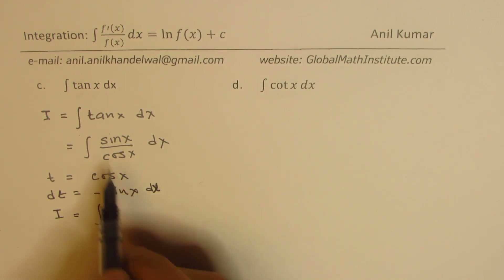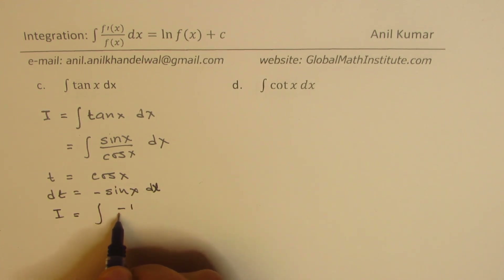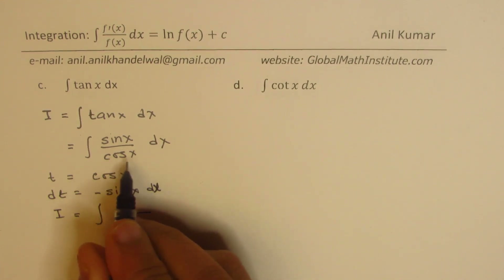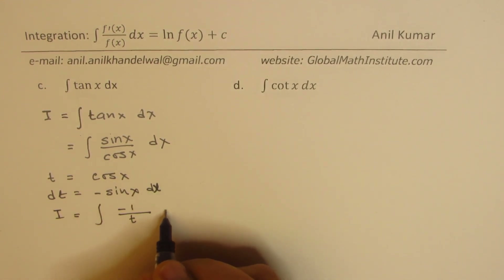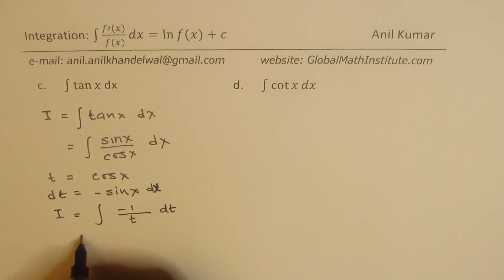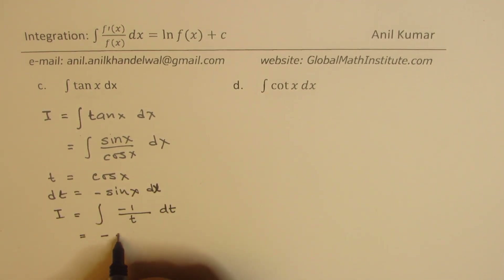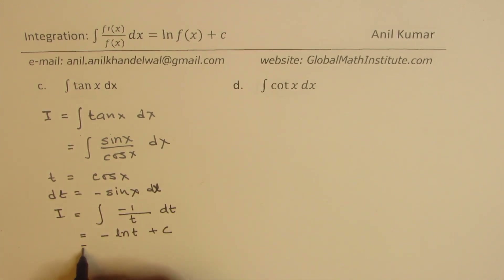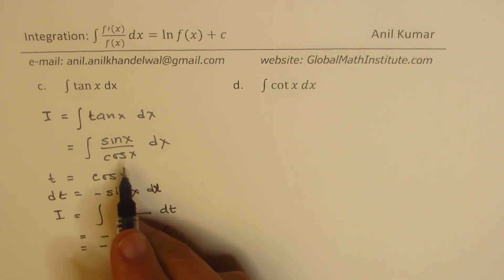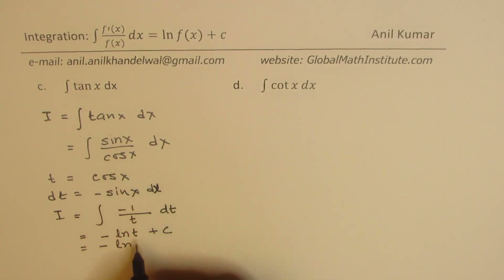Since we get a minus sign, we have the integral equal to −(1/t) dt, so this integral is −ln t + c. Substituting back, t = cos x, so the answer is −ln(cos x) + c.